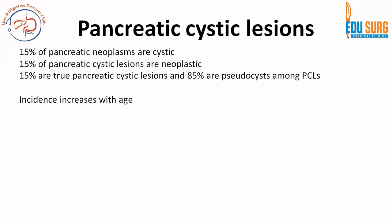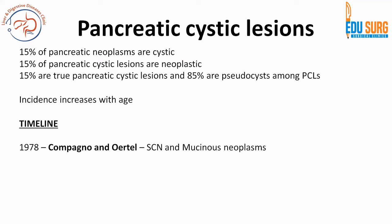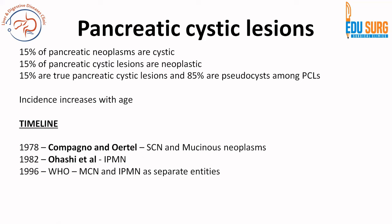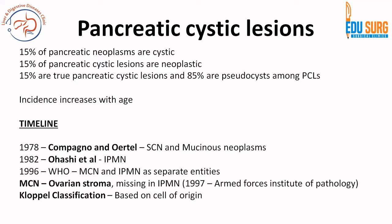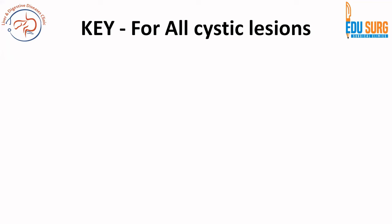Incidence of cystic lesions increases with age. In 1978, Compagno and Altel gave serous and mucinous as a classification. Then in 1982, OHASHI termed IPMN. Then WHO said that MCN and IPMN are separate entities, and in 1997 it was found that mucinous cystic neoplasm has ovarian stroma which distinguishes it from IPMN. WHO in 1996 and 1997, and the Armed Forces Institute of Pathology, then started the classification — the Clopel classification based on cell of origin and the WHO classification based on malignant potential. A lot of questions come from this slide.